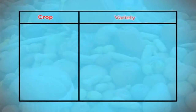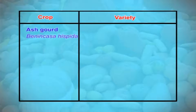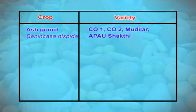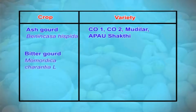Now let us go through varieties of some Cucurbitaceae vegetables. In ash gourd, which is botanically known as Benincasa hispida, the common varieties are Ko-1, Ko-2, Mudilar, APAU, and Shakti.